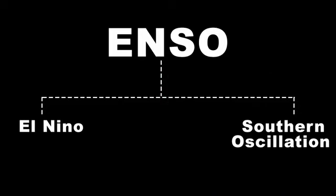So far we have learned what and where ENSO takes place. Now it's time to know how it all happens. To understand how ENSO occurs, we will break it into three phases — that's how it will make sense and step by step the concept will get clearer.